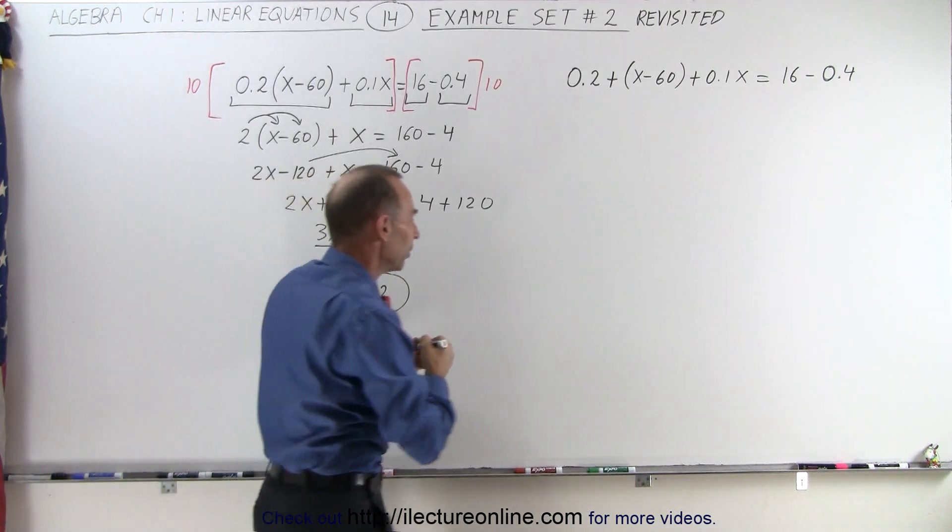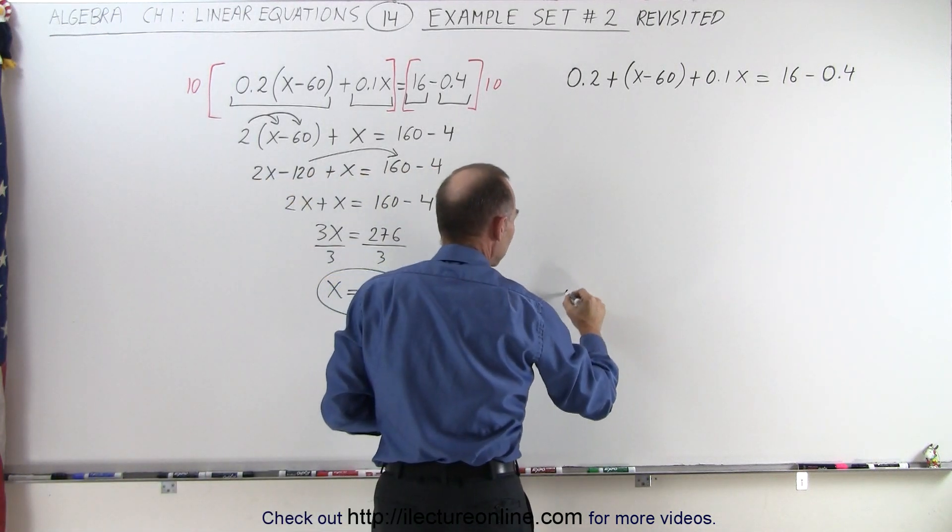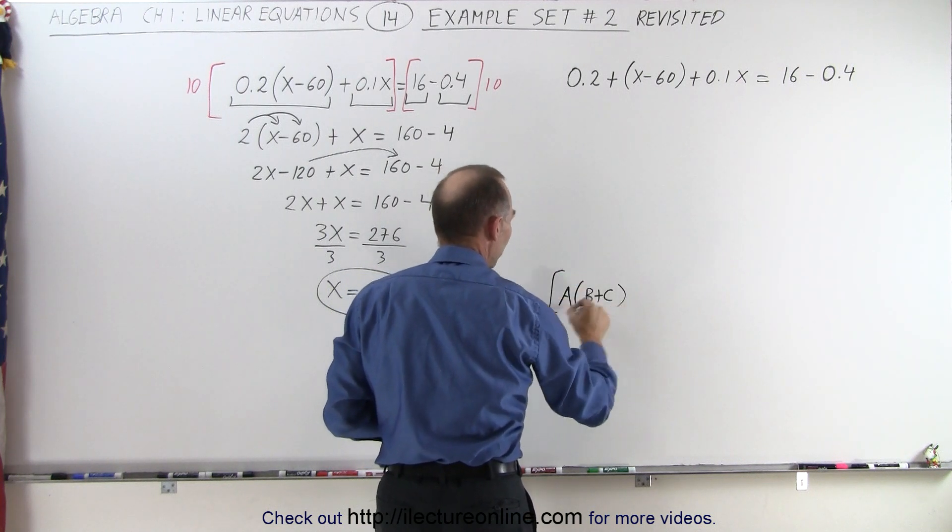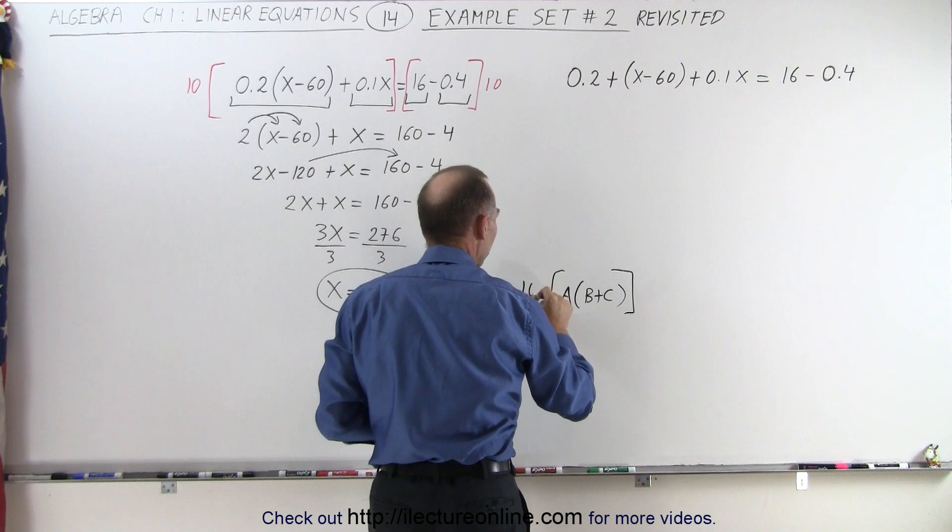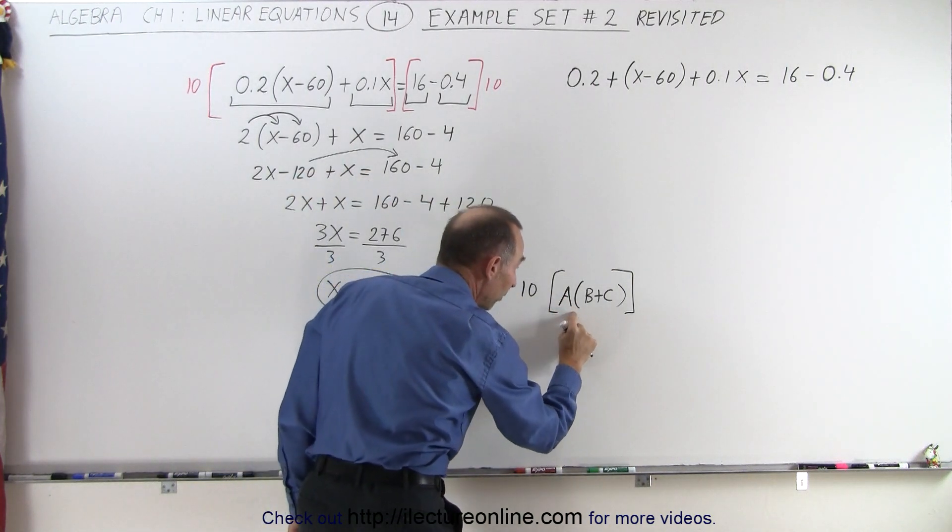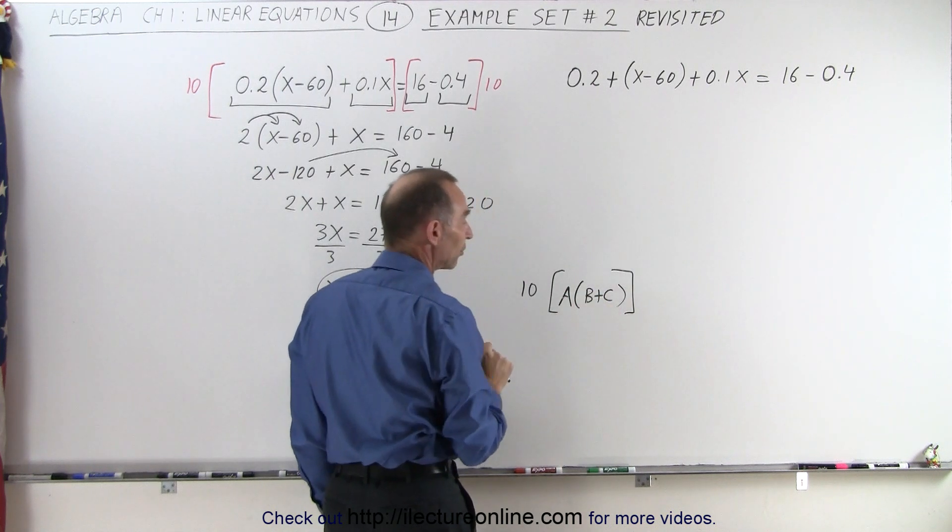Let me show you as an example. Let's say we have the quantity a times b plus c and let's say that we're going to multiply that by the number 10. So when we do that, since a is multiplied times b plus c so that these two are factors,